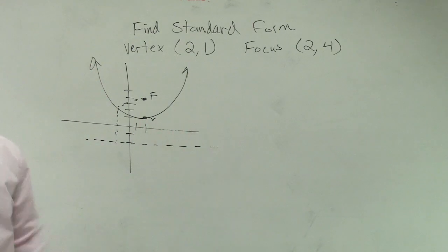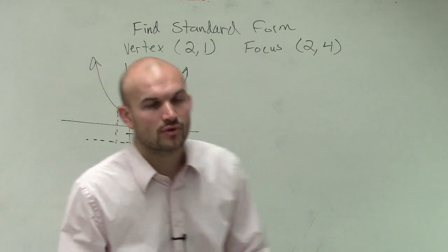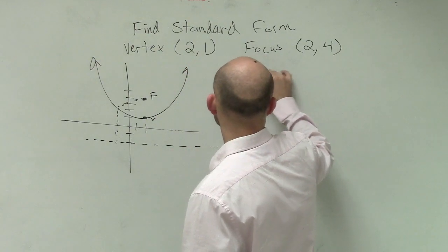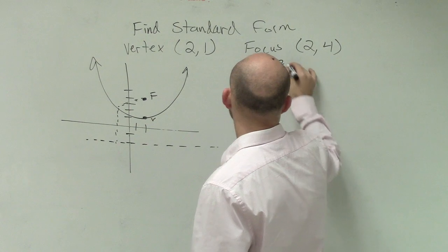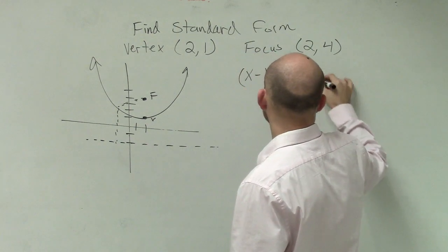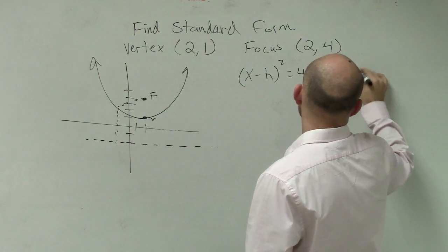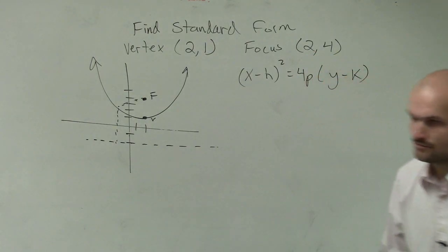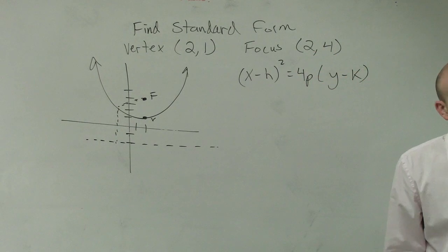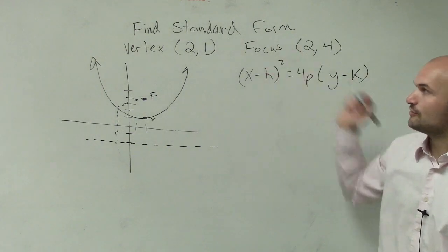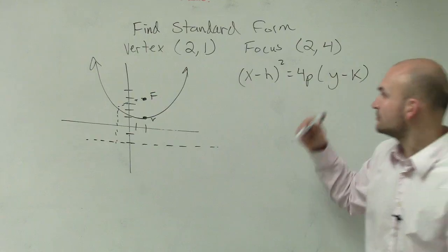So now we know we're dealing with a parabola that's going to be vertical. So we can write the equation. So we have (x - h)² = 4p(y - k). So they said find the standard form. So we know that we have our vertex, which is our h and our k. So we can plug that in.